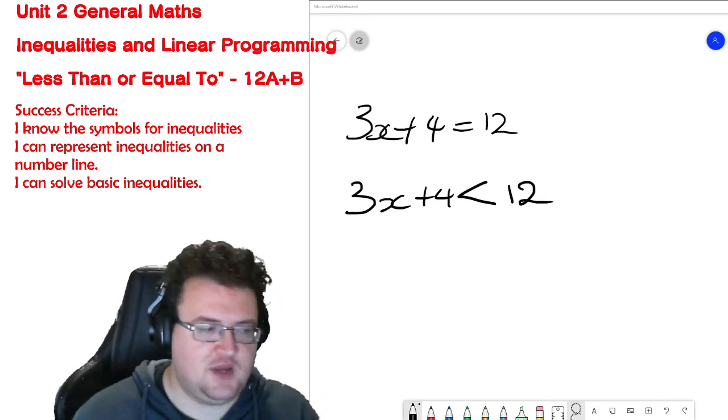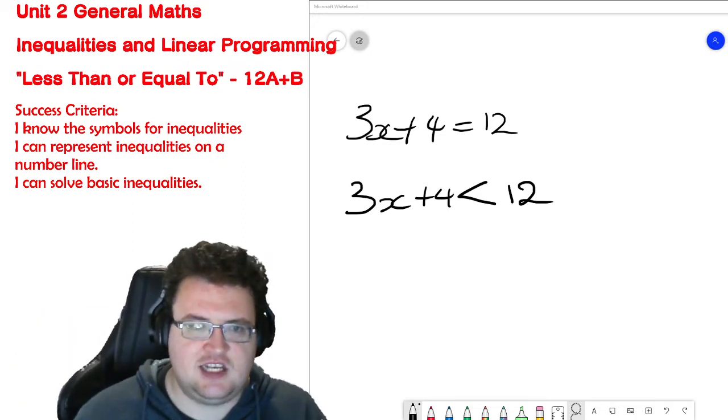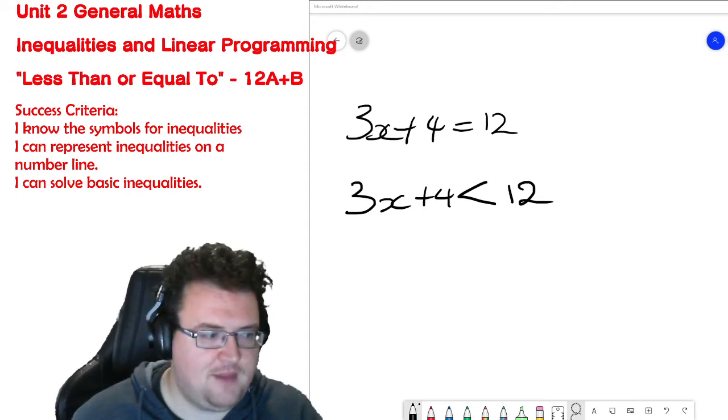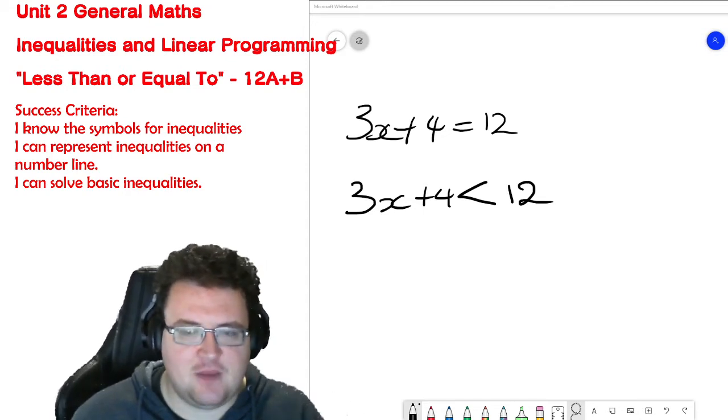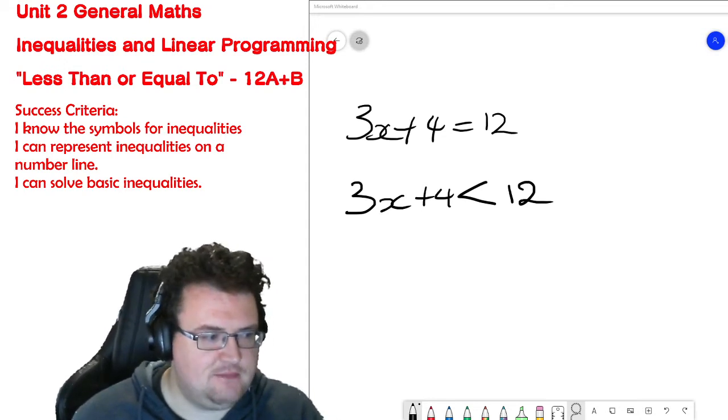When we're dealing with inequalities, we have to change how we think about the sentence. This inequality here is saying that 3x plus 4 is less than 12. That means there are going to be any number of values for x which makes this statement true.